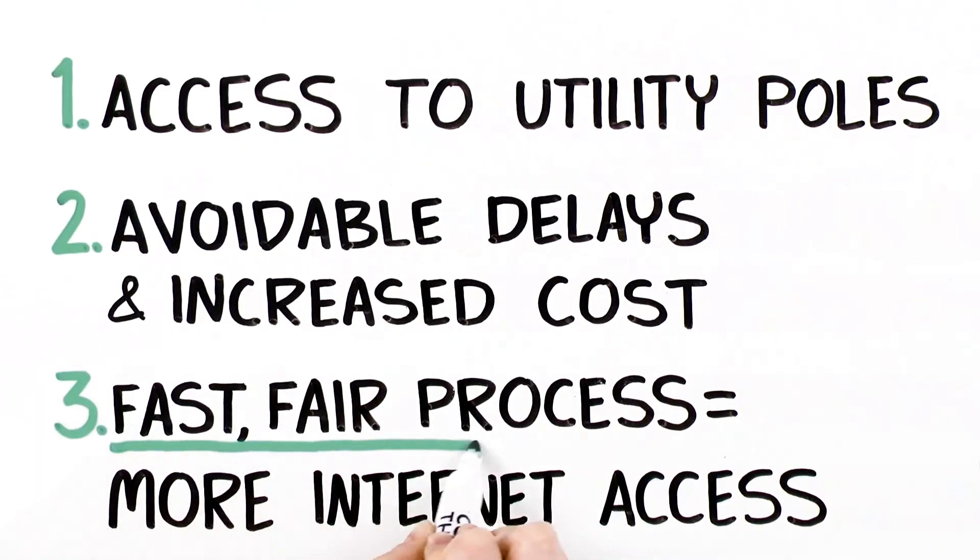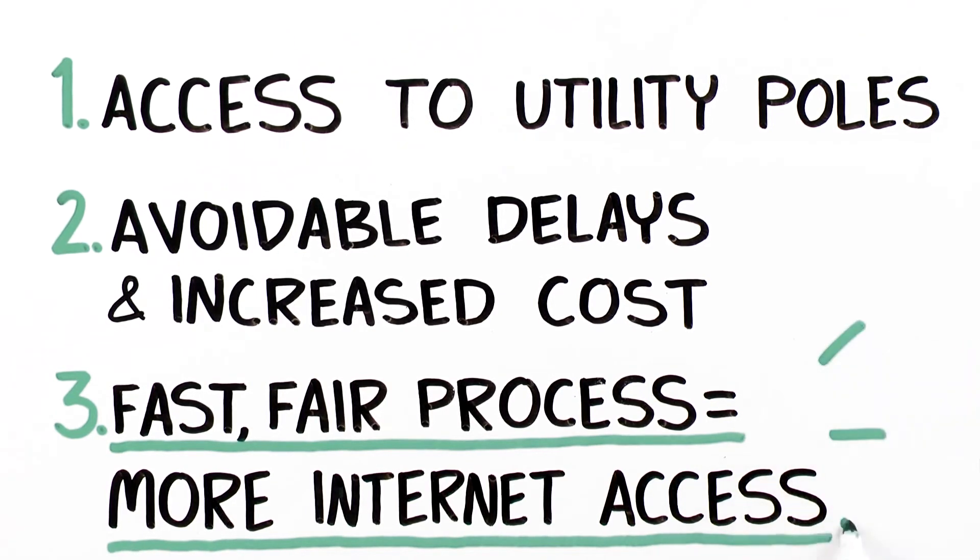A fair, fast process for utility pole access, replacements, and dispute resolution would allow investments in rural internet service to reach more unserved homes and businesses faster.